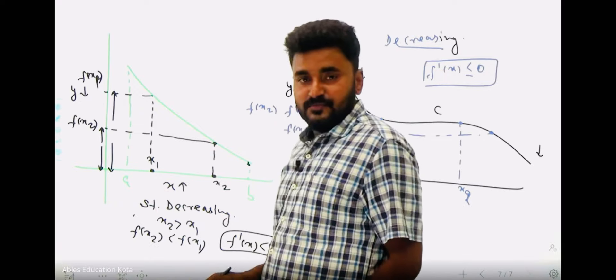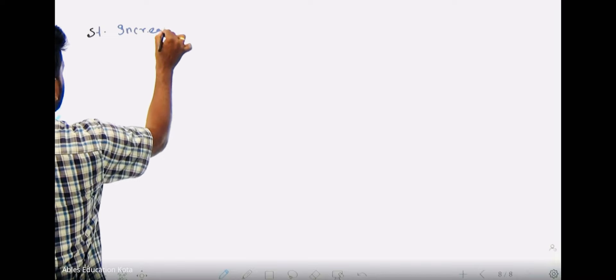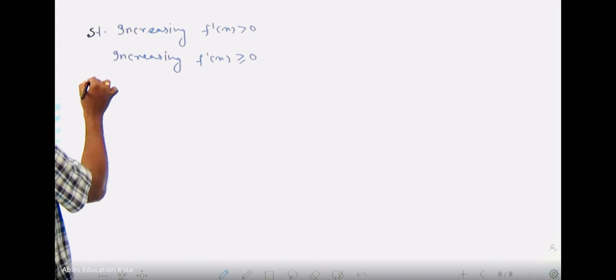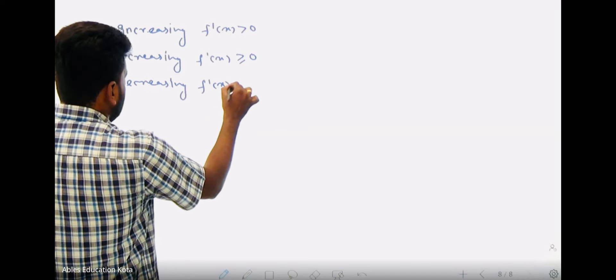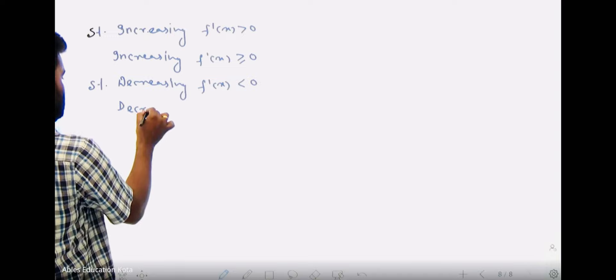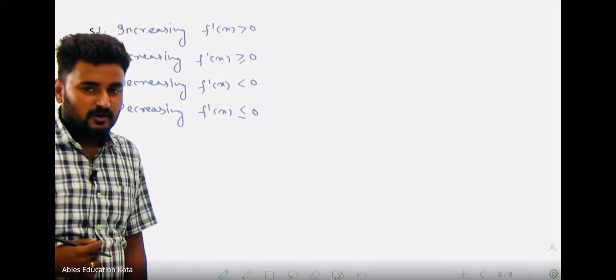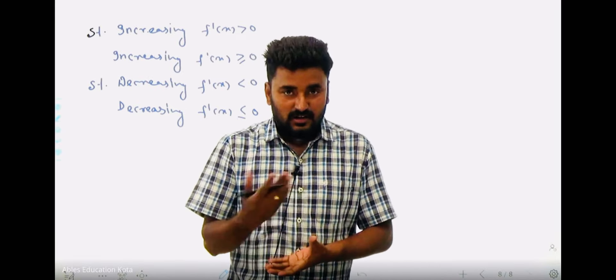To conclude all the above: for strictly increasing, f'(x) > 0; for increasing (non-decreasing), f'(x) ≥ 0; for strictly decreasing, f'(x) < 0; and for decreasing (non-increasing), f'(x) ≤ 0. This is all about monotonicity — increasing and decreasing functions. Thank you, and we will meet in the next topic.